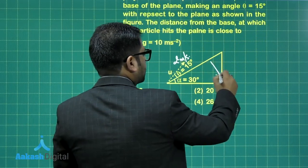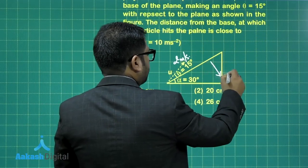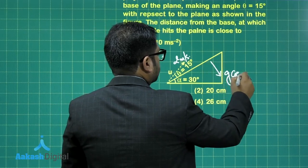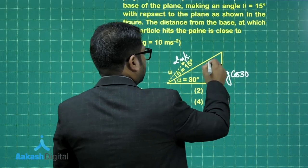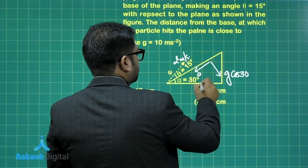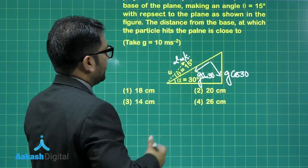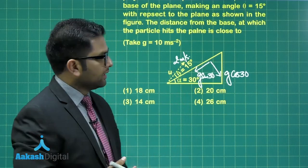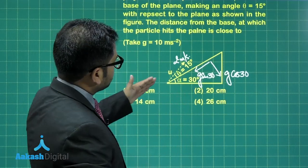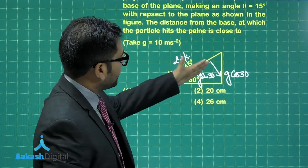This direction would be g cos 30 and this direction would be g sin 30, giving acceleration along x and acceleration along y. Likewise, velocity if you resolve that will be 2 cos 15 and 2 sin 15.